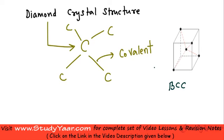At the center you have a carbon atom which is associated with 4 other carbon atoms by covalent bonds. This is a tetrahedral structure which is the basic building block of the diamond crystal.